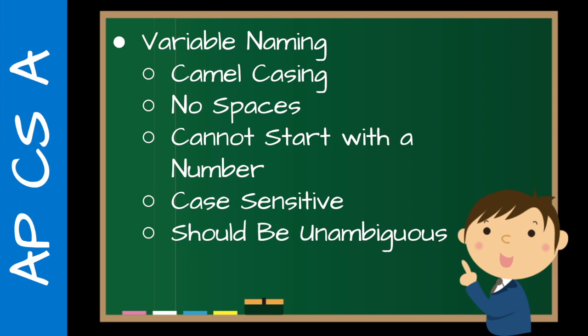There's the practical side of it too. Camel casing — it starts with a lowercase letter and then internal words are capitalized. If you don't do that, it's still going to compile, it just looks weird. No spaces — if you put spaces, it will not compile. If you start with a number, it will not compile. And students need to understand that it is case sensitive. So something like 'age' with all lowercase letters is different from 'AGE' with all capital letters.